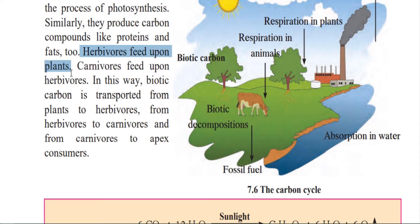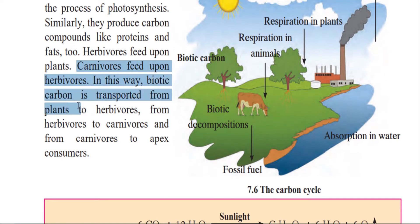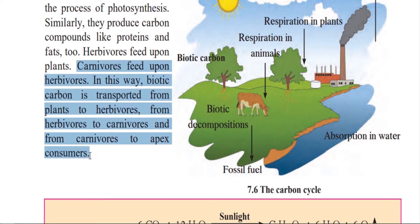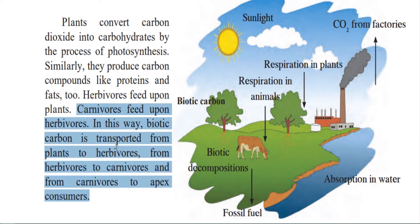Herbivores feed on the plants — animals like cows and elephants — and carnivores feed on herbivores. In this way, the biotic carbon is transferred from plants to herbivores, from herbivores to carnivores, from carnivores to the apex consumers, and from apex consumers to the decomposers and back into nature. That is how the carbon cycle is completed. We have the primary, secondary, and apex consumers, and then from there to the decomposers and back to nature.